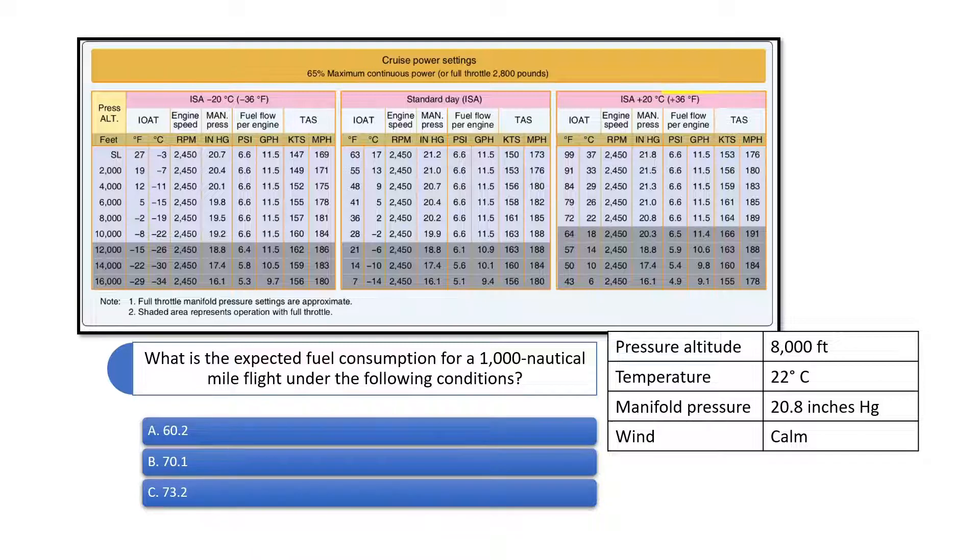See the figures on the right side of the chart when outside air temperature is above standard. Notice the fuel flow of 11.5 gallons per hour (GPH), true airspeed of 164 knots, and the manifold pressure setting of 20.8. We can use an E6B calculator to solve this problem.